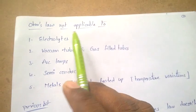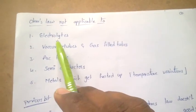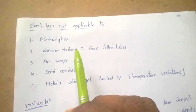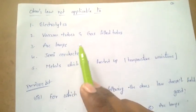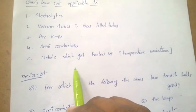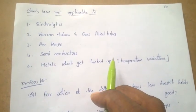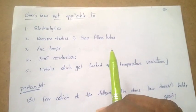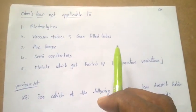Ohm's law is not applicable to electrolytes, vacuum tubes and gas-filled tubes, arc lamps, semiconductors, and metals which get heated up. For all these, Ohm's law is not applicable or does not hold good. This is a very, very important bit.